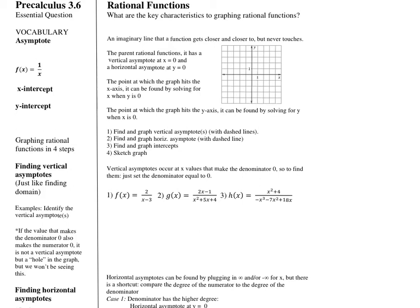Alright, next section here — 3.6 is on rational functions. The key characteristics to graphing rational functions involve important vocabulary. An asymptote is an imaginary line the function gets closer and closer to but never touches. Our parent function is 1 over x — the most basic version. It has a vertical asymptote at x equals 0 and a horizontal asymptote at y equals 0.